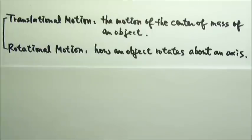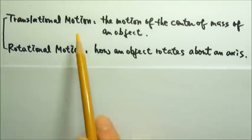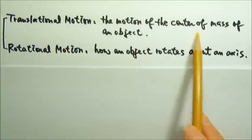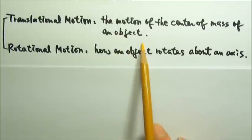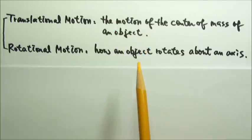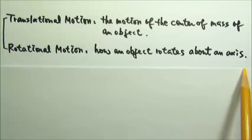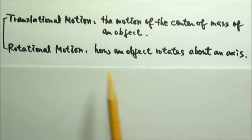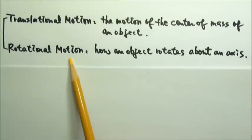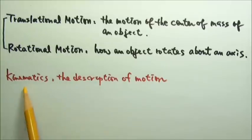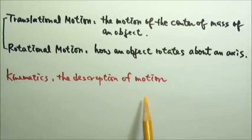The projectile motion we studied is about the translational motion of a projectile. The study of how an object rotates about an axis is rotational motion. We will start with kinematics — the description of motion.